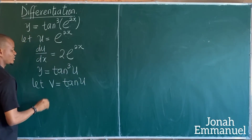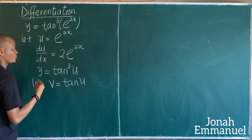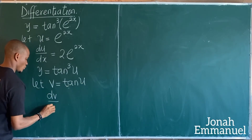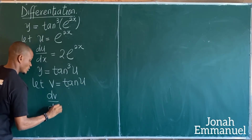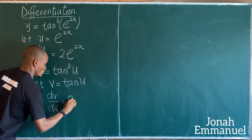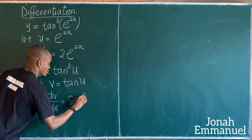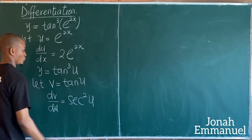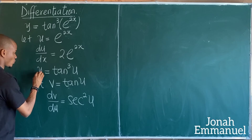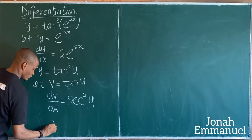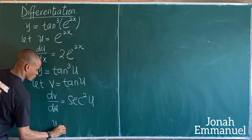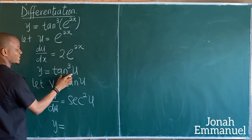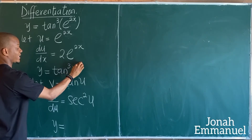If I differentiate v with respect to u, I get dv/du equal to sec squared u. That means y is now equal to tan cubed u, which is tan u to the power 3.